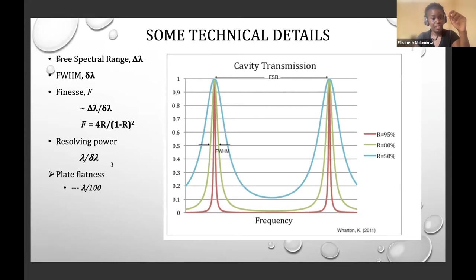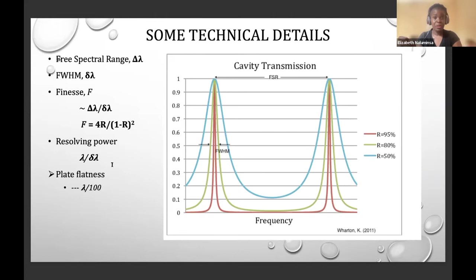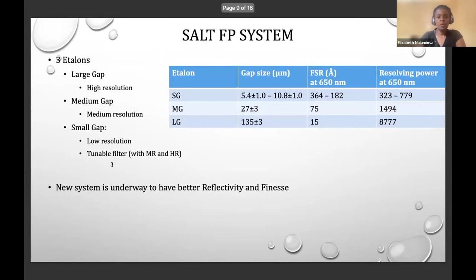Resolving power informs you what kind of studies you can do — high or low resolution. Another critical aspect is plate flatness: you want plates as close to perfectly flat as possible — ideally λ/100. Any defects in plate flatness, whether real physical defects or apparent defects, will lower your finesse. So plate flatness is very important, both physically and in terms of avoiding issues that could affect apparent flatness.